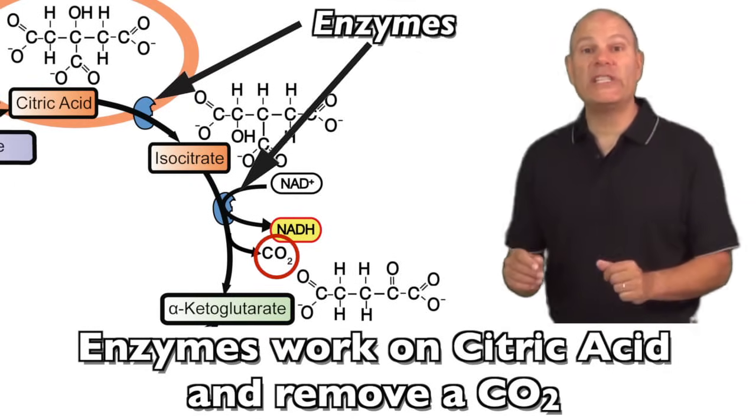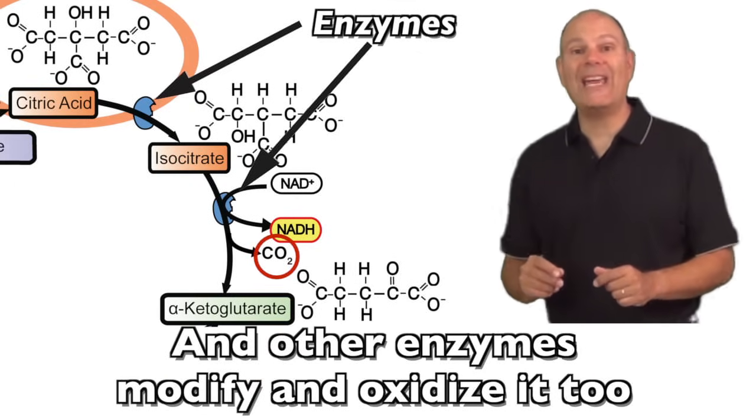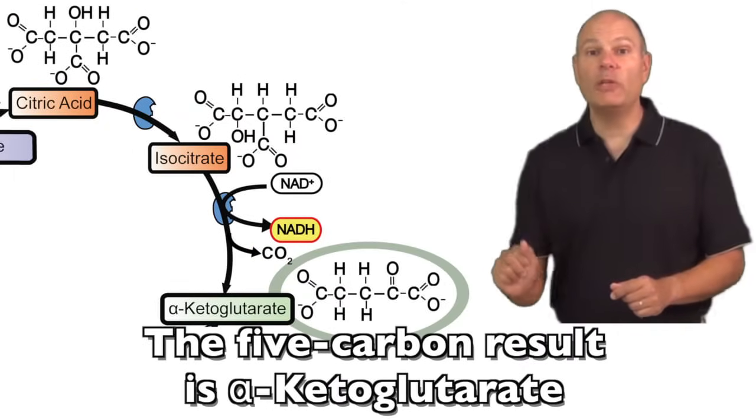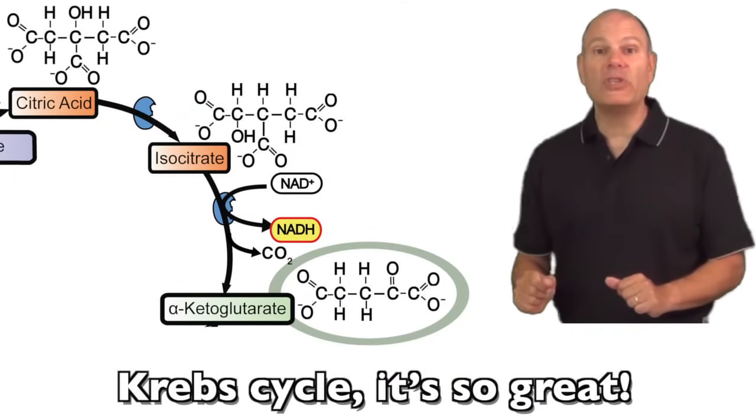Enzymes work on citric acid and remove the CO2, and other enzymes modify and oxidize it too. The 5-carbon result is alpha-ketoglutarate. Krebs cycle, it's so great.